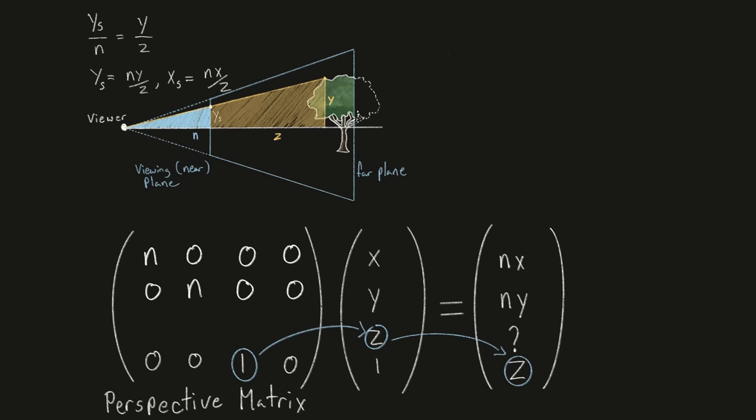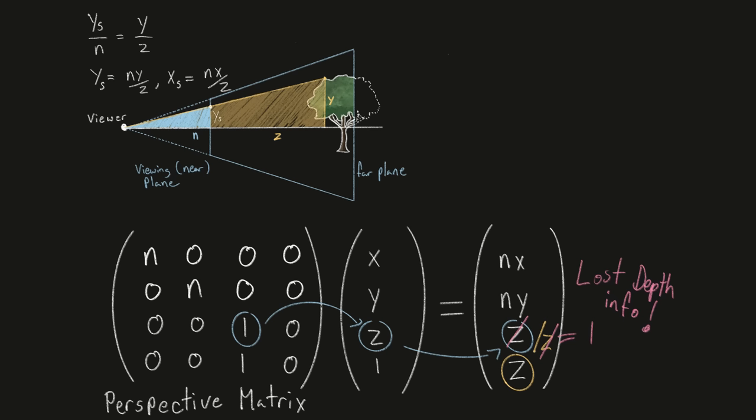Now all that's remaining is the third row, and an easy mistake to make is to think this can also just be 0, 0, 1, 0, to copy the z depth values into the solution. The problem is, every component will be divided by w, including this one. z over z is just 1, and now we've lost our depth information and won't know which objects should be drawn in front of the others.